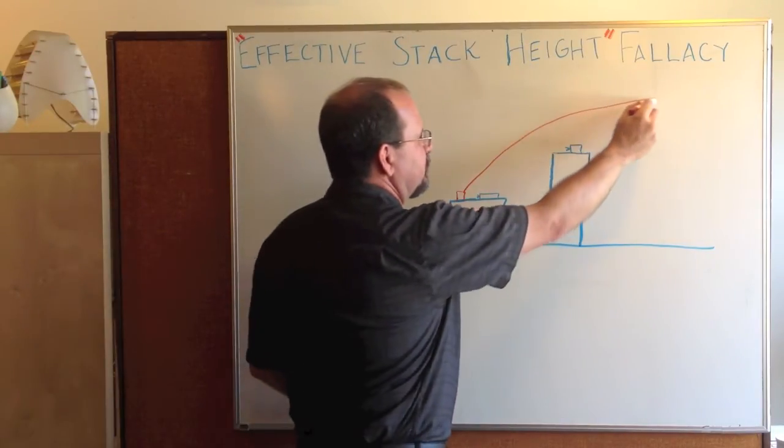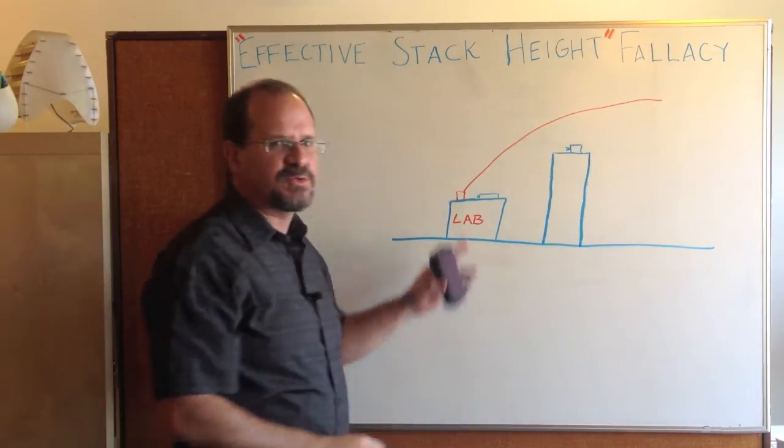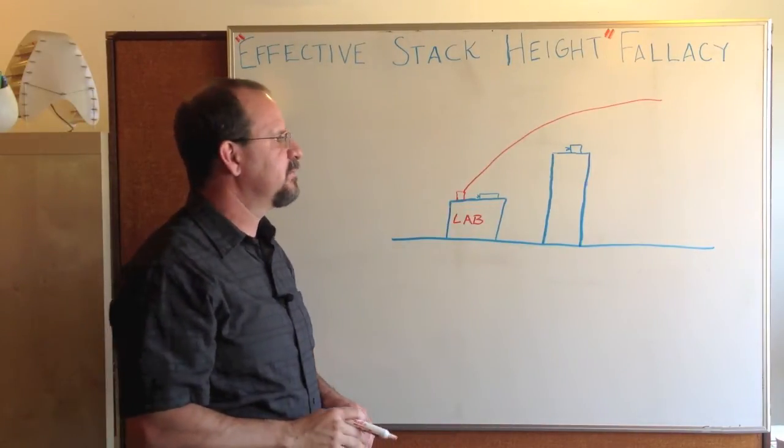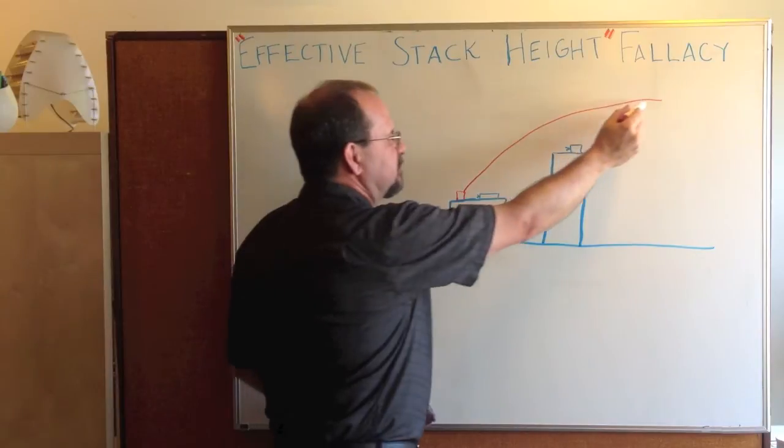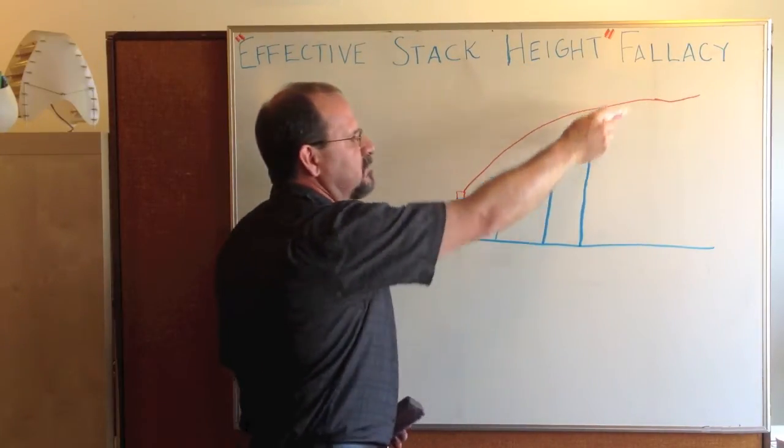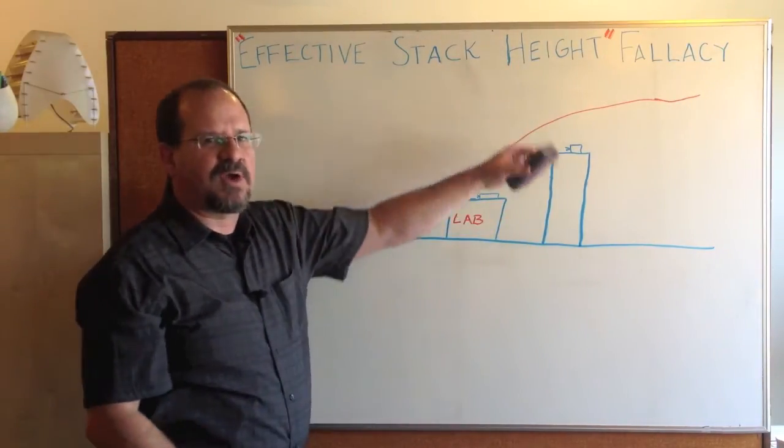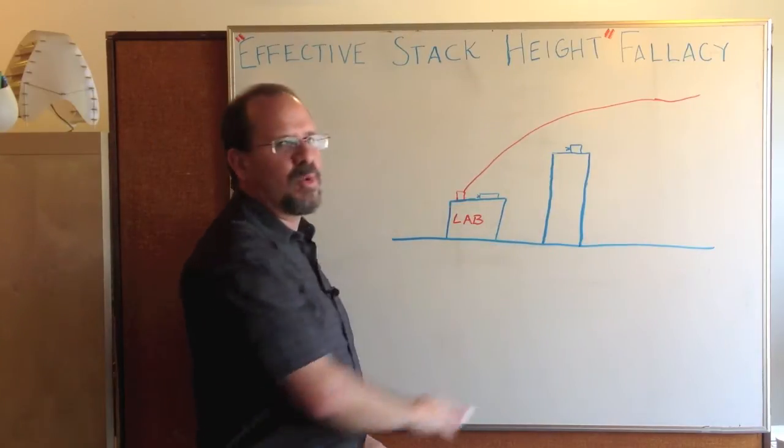In the ASHRAE handbook, there's a series of equations that you use when you're doing laboratory exhaust design that predict plume rise. They predict it all the way out to some highest point, some final rise that happens a long way downwind.